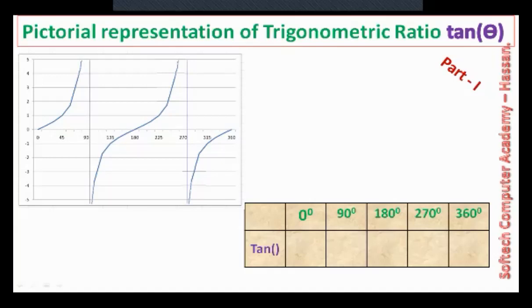If you look at this diagram, the dark blue color represents tan. The horizontal line represents the angle and the vertical line represents the magnitude.